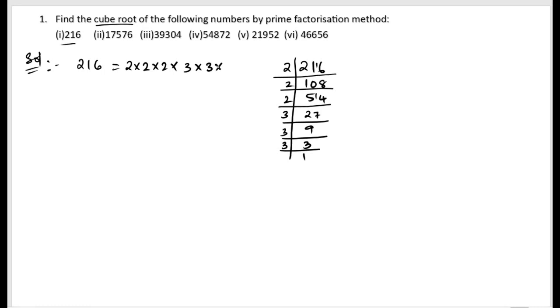Now we will find out the cube root of 216. So the cube root of 2 into 2 into 2 into 3 into 3 into 3. You need to remember one thing: if we are having three numbers inside the cube root, then we can take that as single.